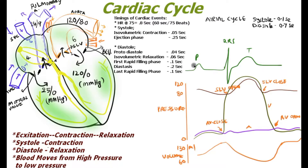The series of electrical and mechanical activities in the heart in one beat is known as the cardiac cycle. If the heart rate is 75, the cardiac cycle time is around 0.8 seconds — 75 beats per 60 seconds. As the heart rate increases, the cardiac cycle timing also decreases. Before going into the details, we must know certain basics of the cardiac cycle.